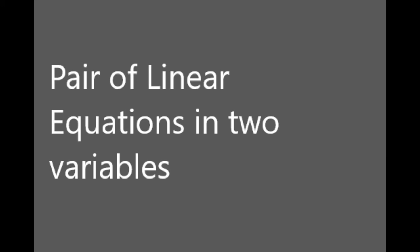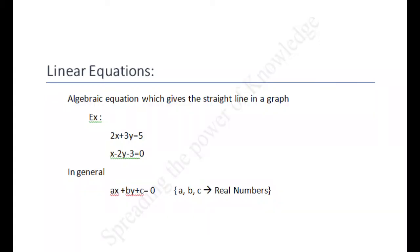Hi, welcome to Rina's YouTube channel. Today we are going to see about pair of linear equations in two variables. We have already seen linear equations in two variables. A linear equation is an algebraic equation in which each term has an exponent of 1, and the graph of the equation results in a straight line.